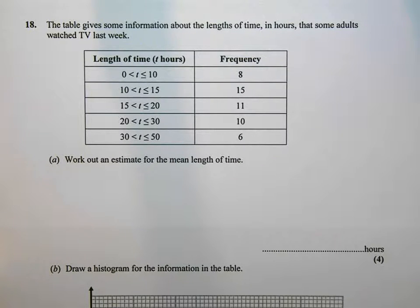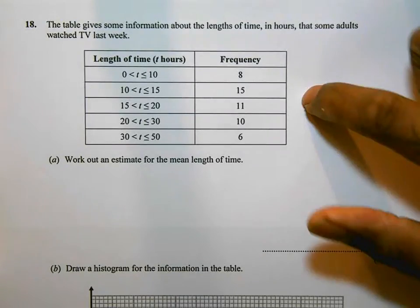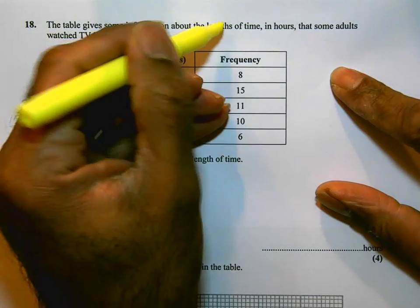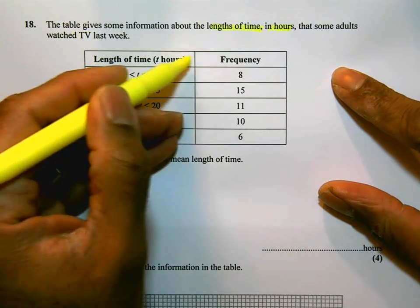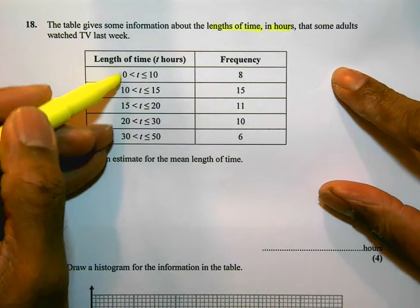This is question number 18 on the November 2014 calculator paper. Let's read through the question. The question says the table gives some information about the length of time in hours that some adults watch TV. So the length of time in hours, the frequency, and we have groups here.